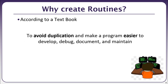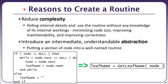The purpose of a routine or method is to avoid duplication and make the program easier to develop, debug, document, and maintain. By following these guidelines we achieve that basic principle of creating routines. The reason for creating a function is to reduce complexity, hide internal details, and allow use without knowledge of internal workings — minimizing code size and improving maintainability and correctness.